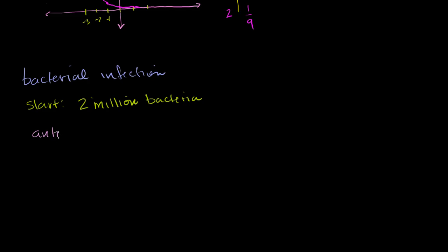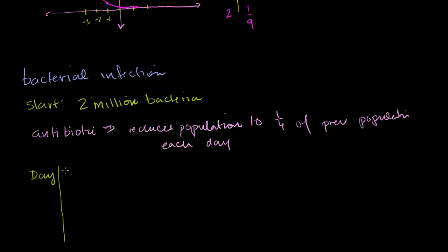So we have the antibiotic, and it reduces population to one-fourth of the previous population each day. They ask us: draw the graph of the size of the bacteria population against time in days. So let's say on day 0, before you went to the doctor, your population is going to be 2 million.